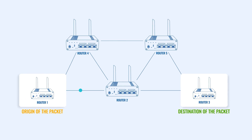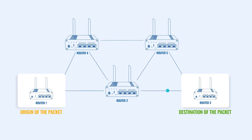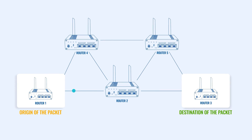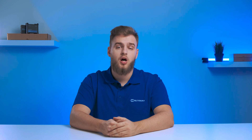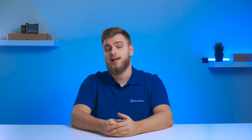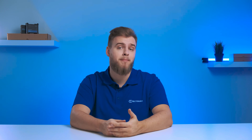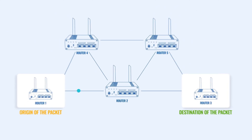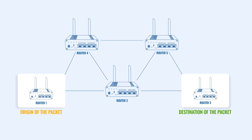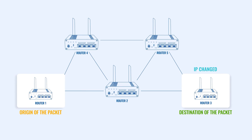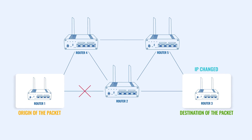Using this information, you create the static network route to the end device through which it will always be reachable. However, since static routing is done manually, it has to be maintained and managed continuously. If something like the routing path or end device IP address changes, the static route will no longer be able to provide access to that end device.